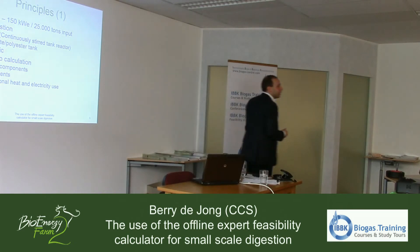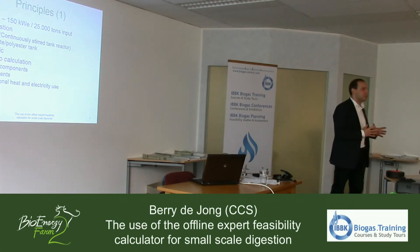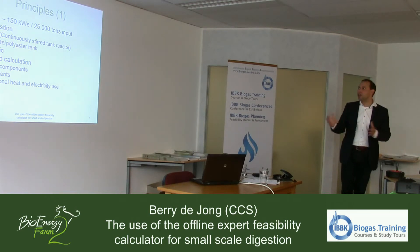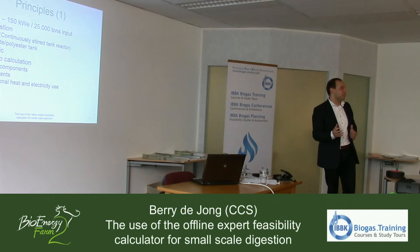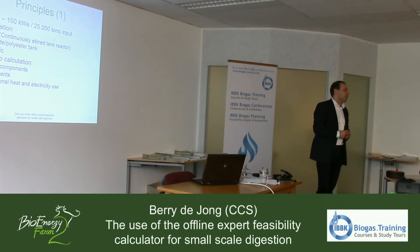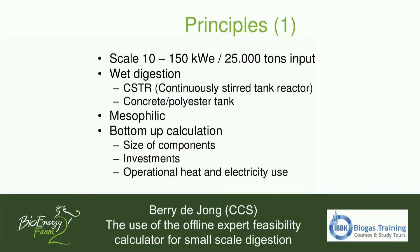The scale of the tool starts at 10 kilowatts electric power of CHP or equivalent, up to about 150 to 200 kilowatts electric, with a maximum input mass of 25,000 tons. We only look at wet digestion with a continuously stirred tank reactor and simple installations — a concrete tank or a polyester tank where possible. The digestive process will be mesophilic, because we don't have enough energy in the biogas to heat mostly manure small-scale digesters up to higher specific temperatures.